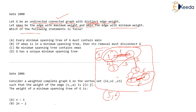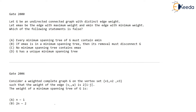Then which one of the following is false? Option A: every minimum spanning tree of G contains Emin. This has to be true. When we construct a minimum spanning tree, we always take the edge which has minimum weight, so the edge having minimum weight has to be in every minimum spanning tree. This cannot be false.